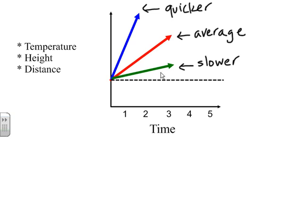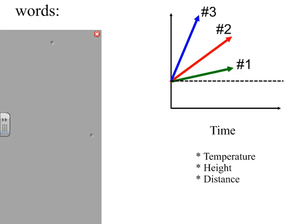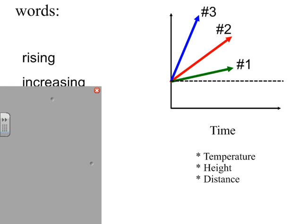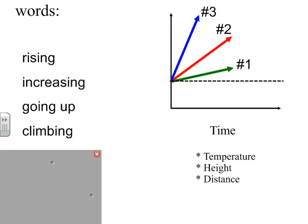So if we take the angle as being when things occur, a little bit slower because it's closer to the baseline, a little bit on the average, and a lot quicker. So let's take a look at just this going up. And here I have them numbered one, two, and three. And we're going to use some words in relation maybe to temperature, to height, to distance, that we could describe these lines that are going upwards. We might use words like rising, or increasing, going up, or climbing.